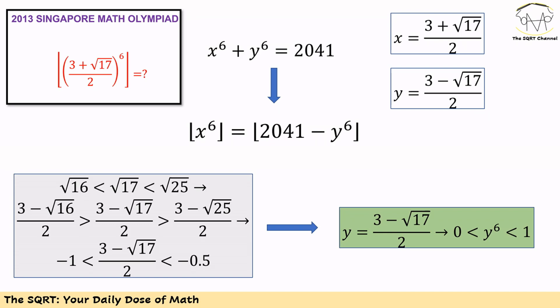If we apply the floor operator, then floor of x to the power of 6 equals floor of 2041 minus y to the power of 6. We can show that y to the power of 6 is between 0 and 1. The reason is simple: we can show that y is less than 0 but greater than minus 1. So if we use y to the power of 6, it's going to be a positive number but less than 1.